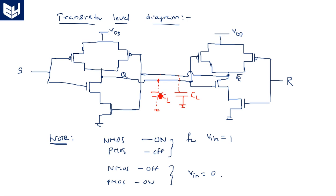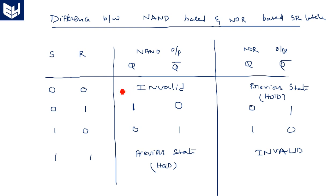This lumped capacitance, multiplied by the internal transistor resistance, provides the rise time and fall time, from which we can calculate the transient analysis of the circuit.